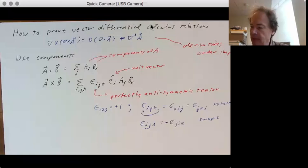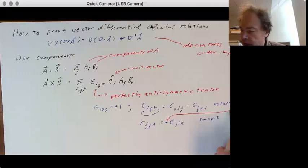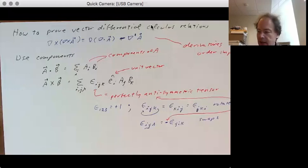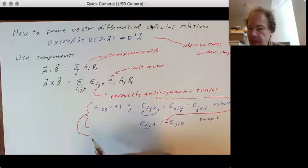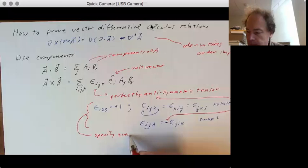So that minus sign there, that goes with the anti-symmetric. And these rules right here specify every element of epsilon i, j, k.